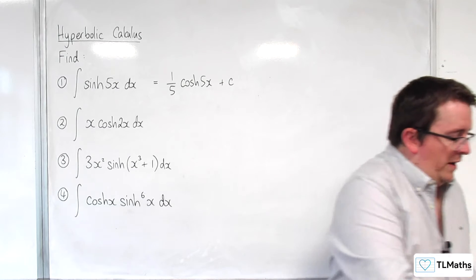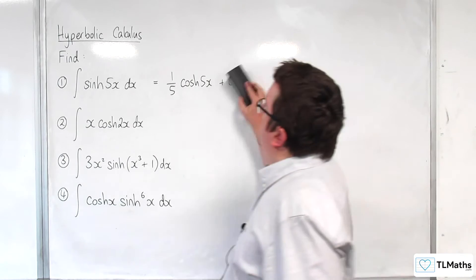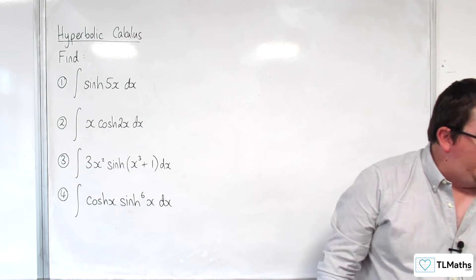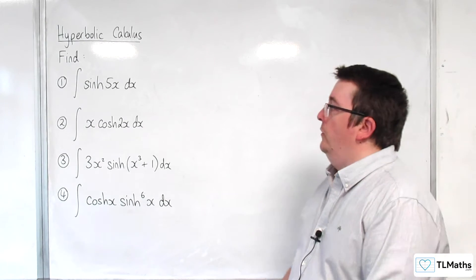Number 2, I'm just going to erase that so I've got a bit of space. Number 2, x cosh of 2x, where we use integration by parts on that one.